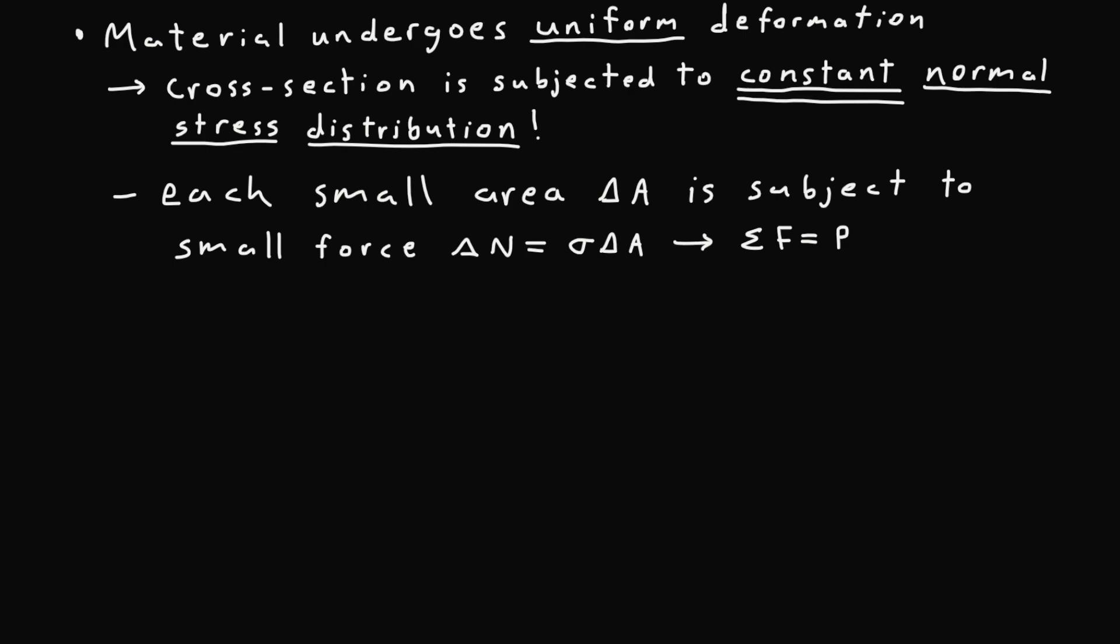So now let's consider average normal stress. Again this is sigma equals n the internal normal force over a the cross sectional area where sigma is of course the average normal stress at any point.